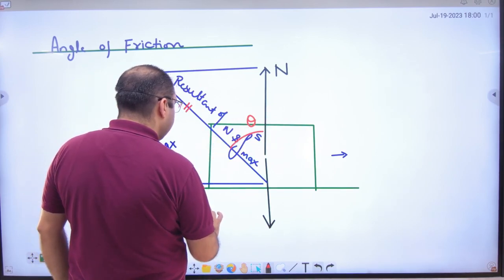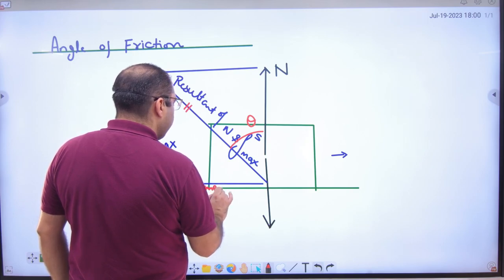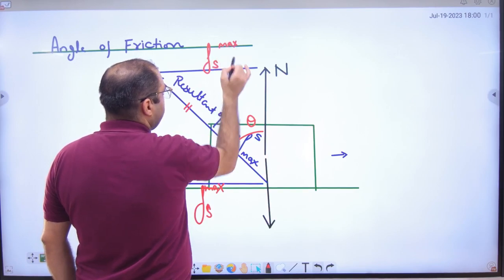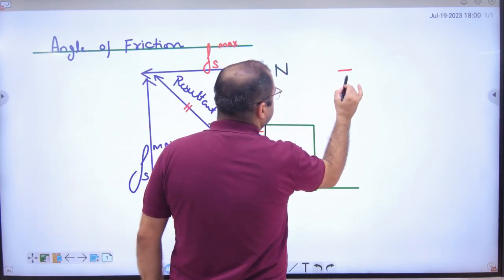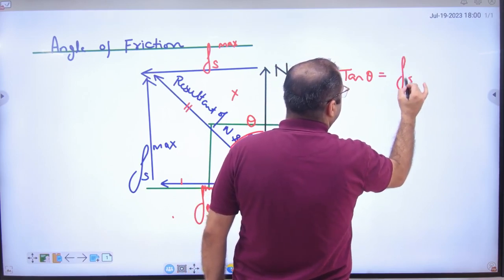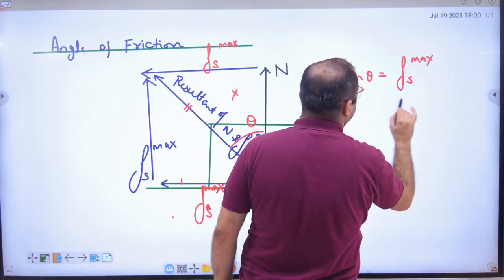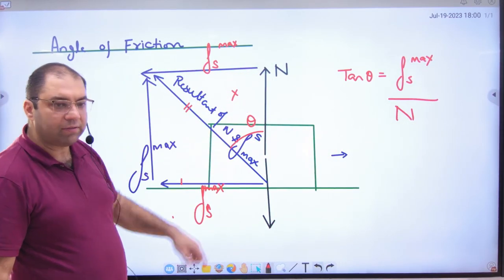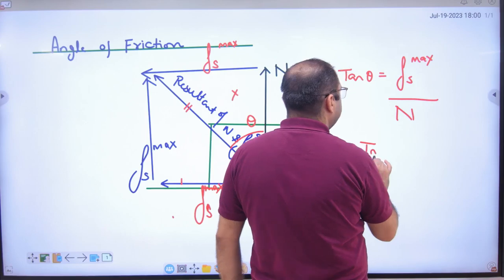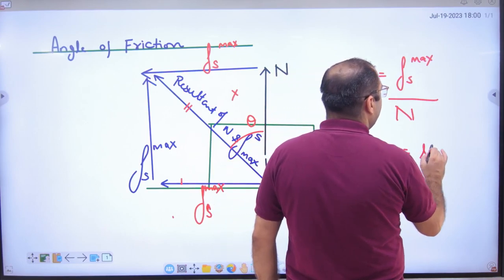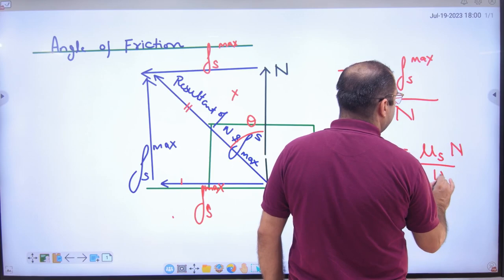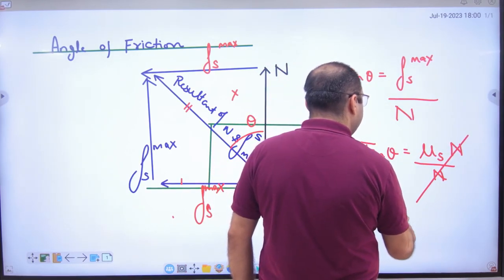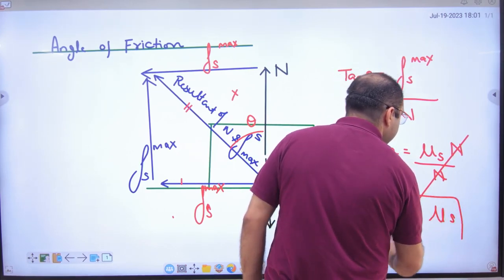This S-max, this also F S-max. So in this triangle, tan θ value equals F static max divided by normal reaction. Tan θ, this upon this, so here tan θ equals μ times, μ static, normal reaction by normal reaction cancels. Here tan θ equals μ static.